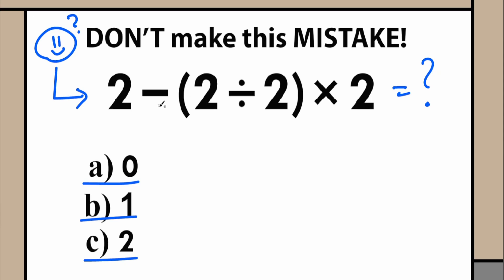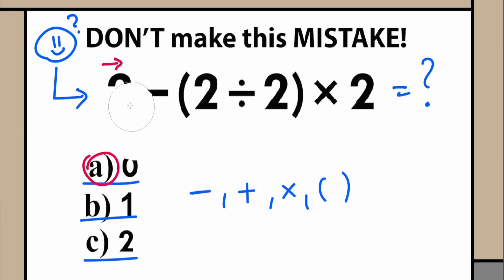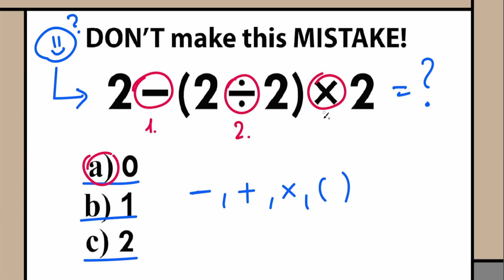What do I mean by the wrong order of operation? Right here we have three mathematical operators: subtraction in the beginning, division, and multiplication. And moreover we have parentheses. A lot of students might just go from left to right — 2 minus 2 equals zero, then divide by 2 and multiply by 2 — and get zero. So maybe the correct answer is A. Or another part of students say maybe we need to divide first or multiply first. It turns into a big argument, because obviously whatever order of operation we select is going to create a different answer.